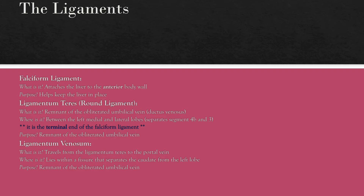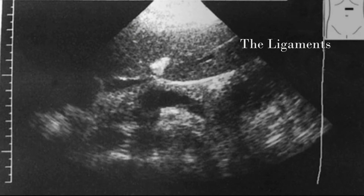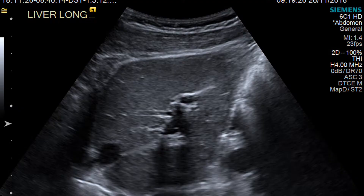We also have the ligamentum venosum, which travels from the ligamentum teres to the portal vein. It lies within the fissure that separates the caudate lobe from the left lobe. The ligamentum venosum is the remnant of the obliterated ductus venosus from when we were fetuses. Here you can see an echogenic triangle within the liver — that would be the ligamentum teres or round ligament. And in this longitudinal view of the left lobe, you can see the echogenic line representing the ligamentum venosum.